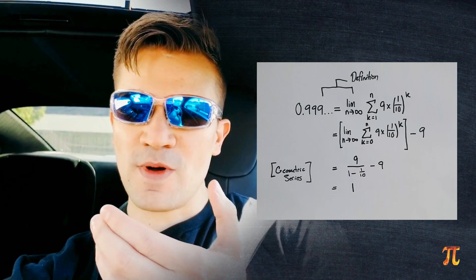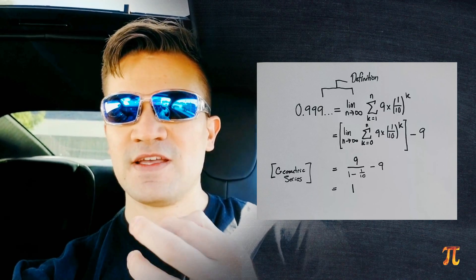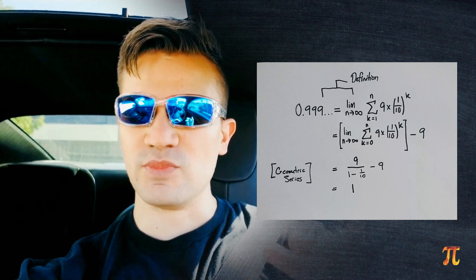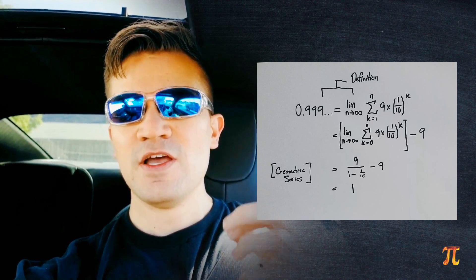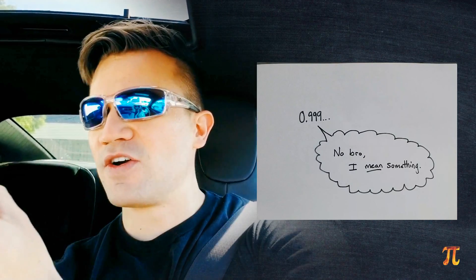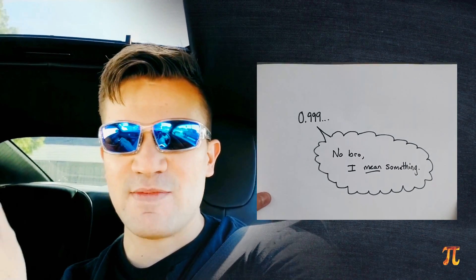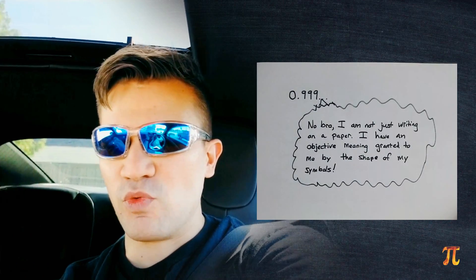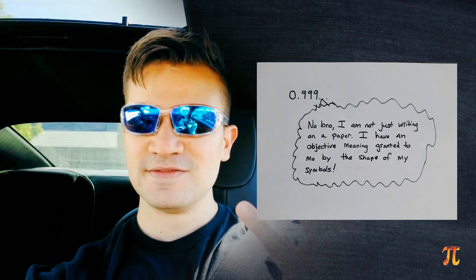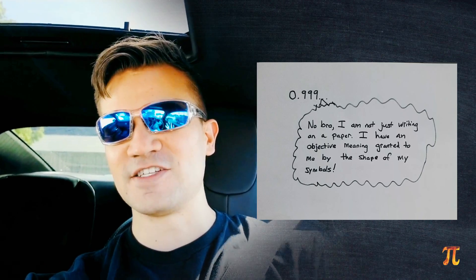But this isn't so much a mathematical claim, and it's weird to have proofs about this. It's really just a definition of how we're using a symbol. It is not a mathematical claim. Point nine repeating, the symbol, does not have some innate identity that we are comparing to one. No, it's just that the way we interpret this symbol makes it equal to one.